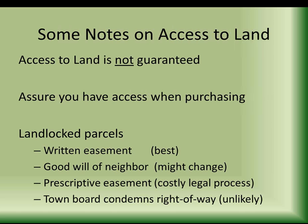A brief note about access to your land: some parcels don't have road frontage, and without it, it can be hard to get to your property. Many times access is via an easement over someone else's property, but that's not guaranteed — people have bought landlocked parcels and had to go to court to get access. A written easement tied to the deed and signed by both neighbors is the best situation, because the goodwill of a neighbor might change, and there's no guarantee the next owner will agree to it. You can also get a prescriptive easement done by a judge, though that costs money. If you have a parcel without road frontage, talk to a lawyer or the county clerk to see what your situation is.